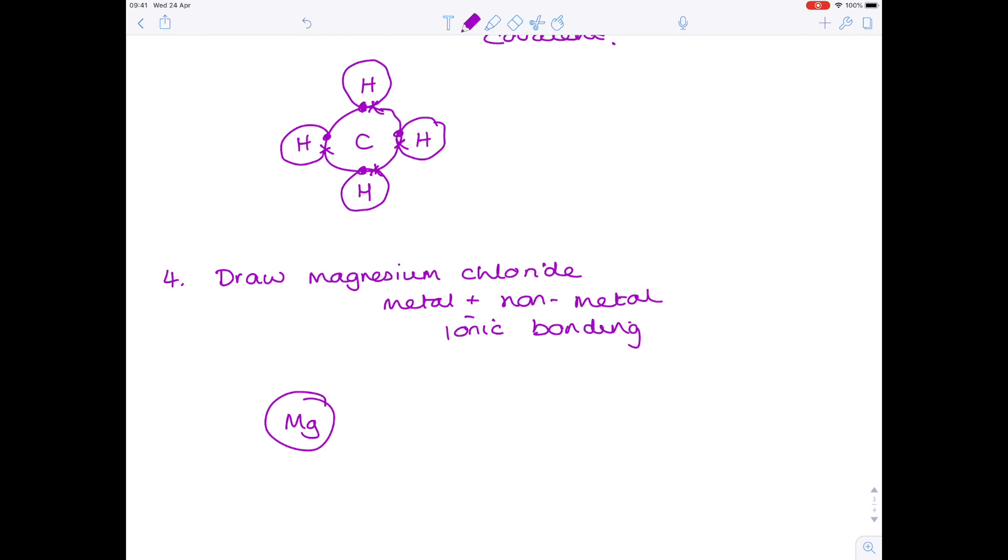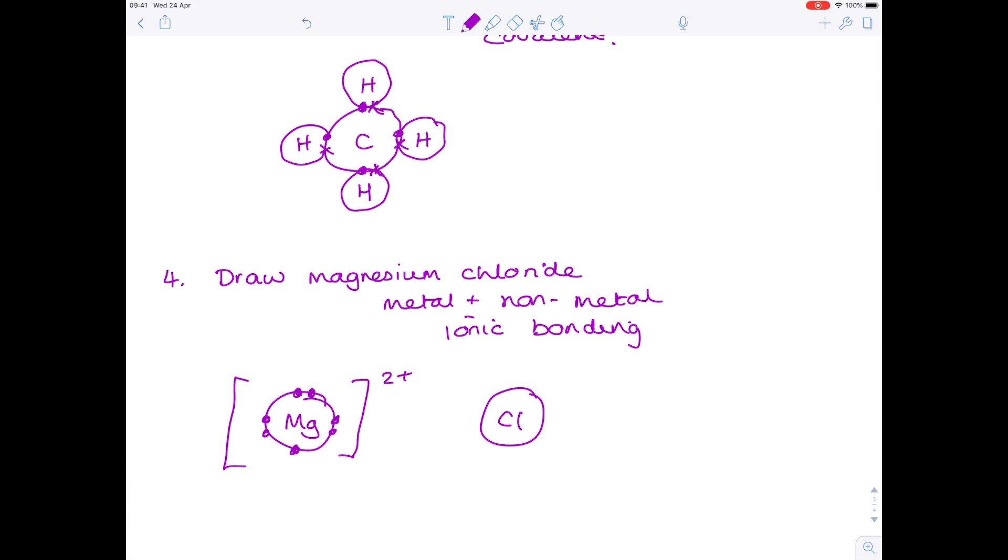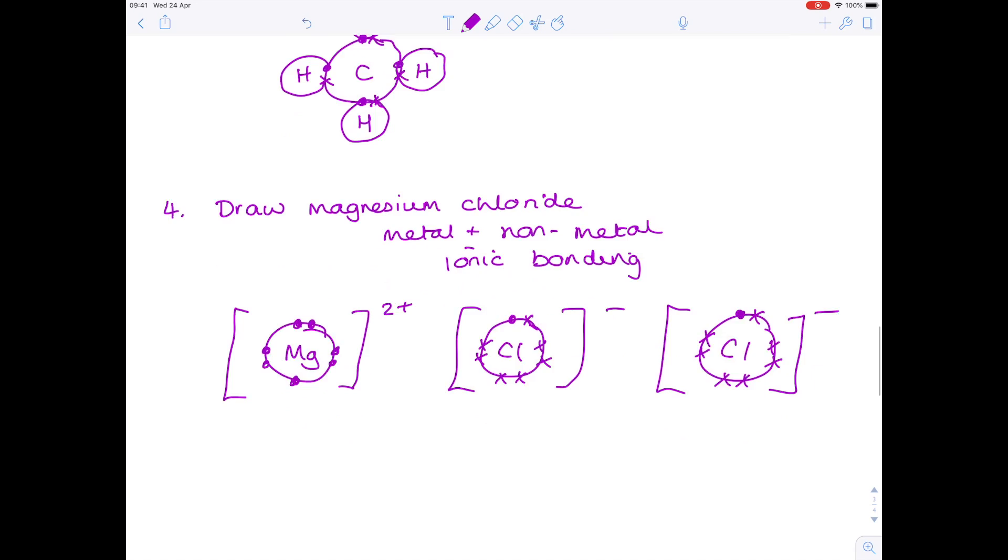So magnesium now has a full outer shell. It's lost two electrons, which is why it's 2+. Notice you need two chloride ions. It's up to you how you draw it, but I'm going to draw it like this. Double check your charges. Yes, that is correct.